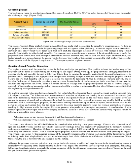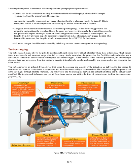If the descent is too rapid or is being made from a high altitude, the maximum blade angle limit may not be sufficient to hold the RPM constant. When this occurs, the RPM is responsive to any change in throttle setting. A sudden and large increase in throttle setting causes a momentary over-speeding of the engine until the blades become adjusted to absorb the increased power. If an emergency demanding full power arises during approach, sudden advancing of the throttle causes momentary over-speeding beyond the RPM for which the governor is adjusted. A momentary propeller overspeed may occur when the throttle is advanced rapidly for takeoff; this is usually not serious if the rated RPM is not exceeded by 10% for more than 3 seconds.